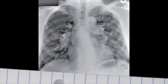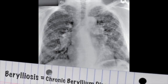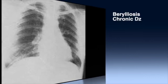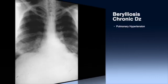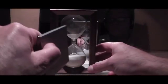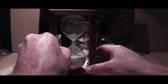Chronic beryllium disease, also called berylliosis, is more common than acute beryllium disease. The disease can progress to pulmonary hypertension, fibrosis, pneumothorax, and the development of non-caseating granulomas. Beryllium sensitization and berylliosis can occur within 50 days of first exposure in modern industry. Some cases of berylliosis don't develop until 30 to 40 years after exposure has ceased.